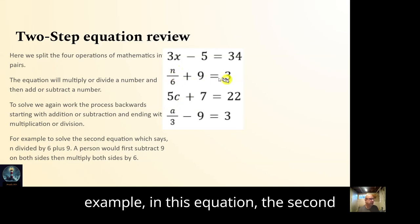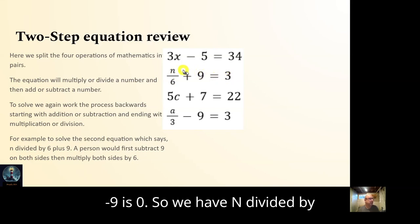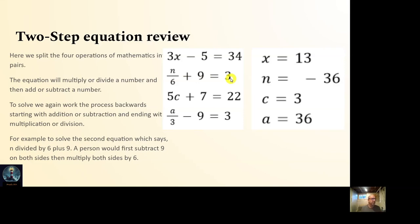For example, in this equation, the second one, n divided by 6 plus 9 equals 3. Then working it backwards would be subtract 9 on both sides. So 3 minus 9 is negative 6. 9 minus 9 is 0. So we have n divided by 6 equals negative 6. Then we multiply by 6 on both sides and negative 6 times 6 is negative 36. And so similarly, we solve all the other equations. So those are the two basic equations.